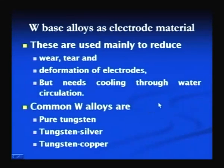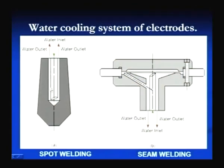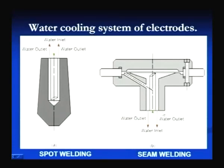Electrode materials must have very good thermal and electrical conductivity and the ability to withstand high pressure at elevated temperature. These electrodes are made of copper or tungsten base alloys, as both materials show good thermal and electrical conductivity. Additions of alloying elements reduce electrical conductivity but are used to increase strength of copper base alloys. Cooling is done through water circulation to maintain electrode temperature within limits. Water is supplied from one side and taken out from another side.